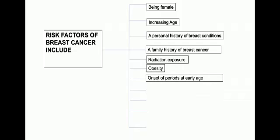The next factor is onset of period at an early age. Beginning a period before the age of 12 increases the risk of breast cancer.